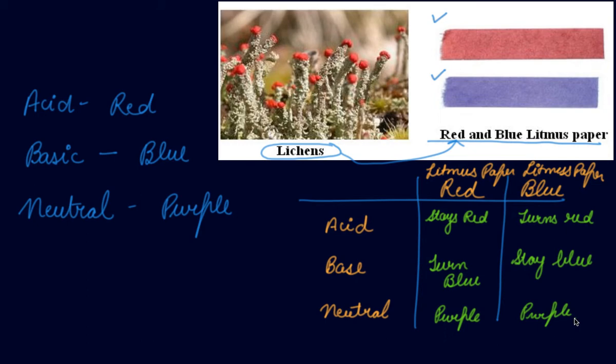Now take some lemon juice and dip a blue litmus paper into it. After about 5 to 10 seconds, you will see that the litmus paper has turned red. The blue litmus paper turning red shows that lemon juice contains acid, so it is an acidic substance.